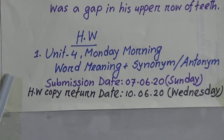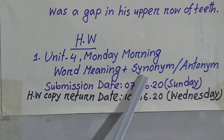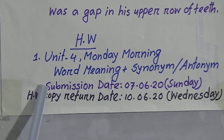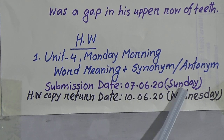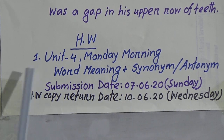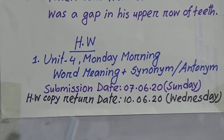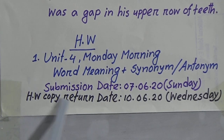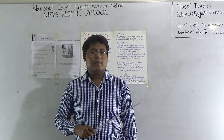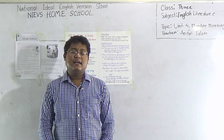Now the most important thing is your homework. Look very carefully — your homework is Unit 4: Monday Morning, word meaning and synonym and antonym. You will do homework only on word meaning and synonym and antonym. Submission date: 7-6-20, Sunday. Homework copy return date: 10-6-20, Wednesday. You are requested to do the homework at home and submit on Sunday and return the copy on Wednesday. My dear students, I hope you have understood today's topic. Keep practicing at home, stay well, see you again — till then, Allah bless.